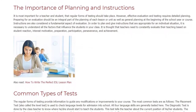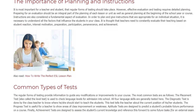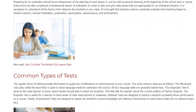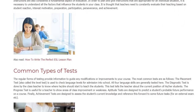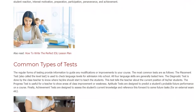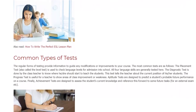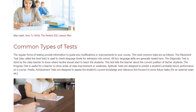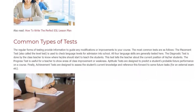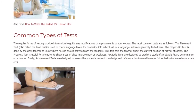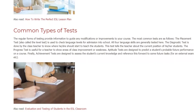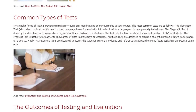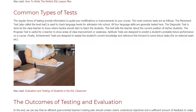Common types of tests. The regular forms of testing provide information to guide any modifications or improvements to your course. The most common tests are as follows: The placement test, also called the level test, is used to check language levels for admission into school — all four language skills are generally tested here. The diagnostic test is done by the class teacher to know where he or she should start to teach the students. The progress test is useful for a teacher to show areas of class improvement or weakness. Aptitude tests are designed to predict a student's probable future performance on a course. Finally, achievement tests are designed to assess the student's current knowledge and reference this forward to some future tasks, for an external exam, etc.